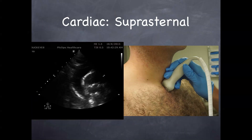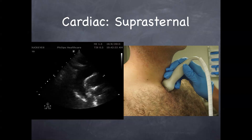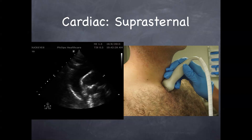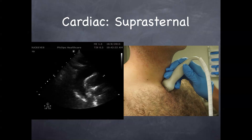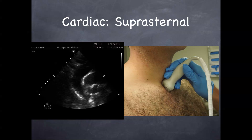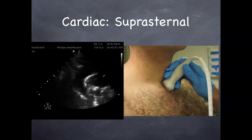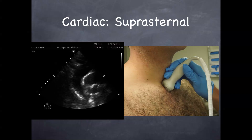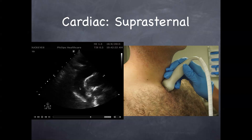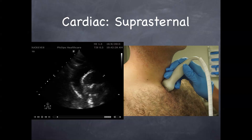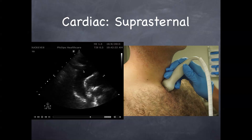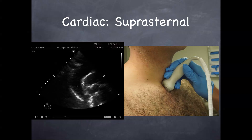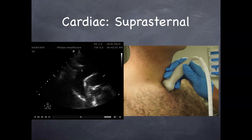Here's a suprasternal view. You do this view if you're concerned about a dissection — if you see a large aortic root, if the patient has ripping chest pain and unstable or unequal pulses. Just stick your phased array probe above the suprasternal notch and look downward at the aortic arch. This is your aortic arch here with a dissection — you can see a nice flap in the middle of this arch.